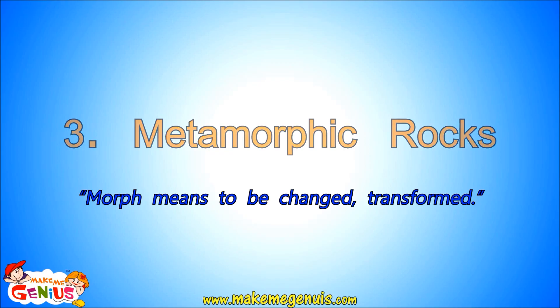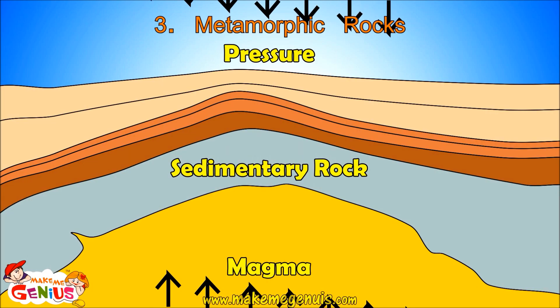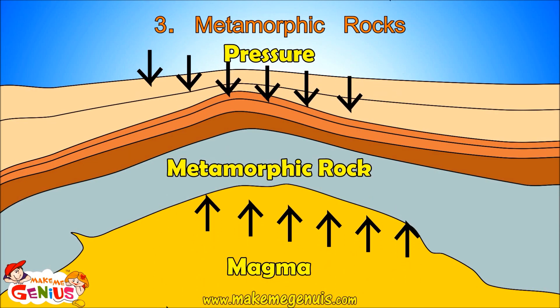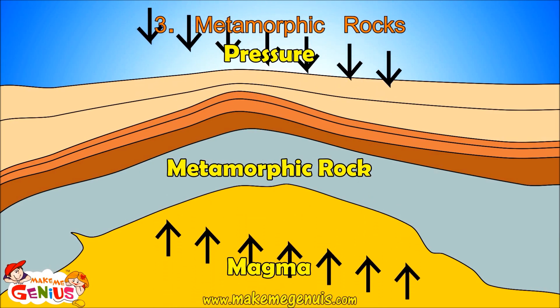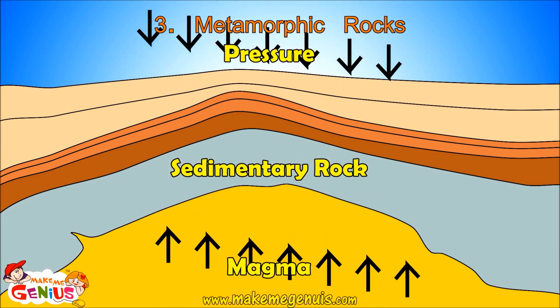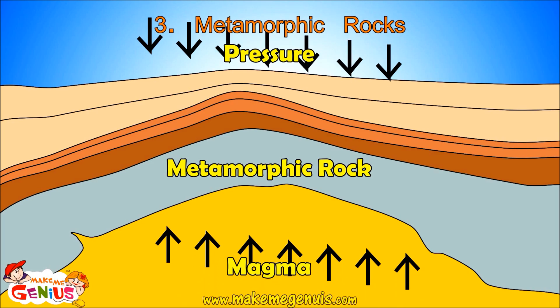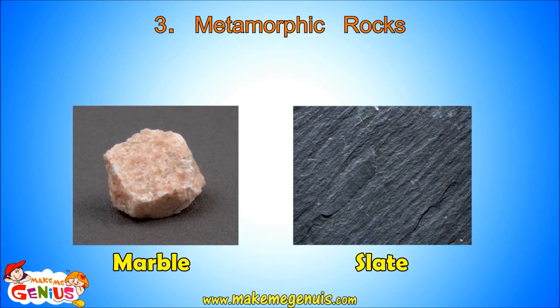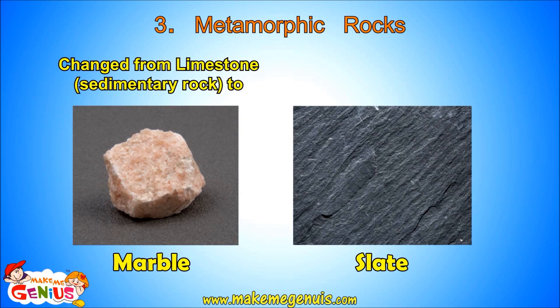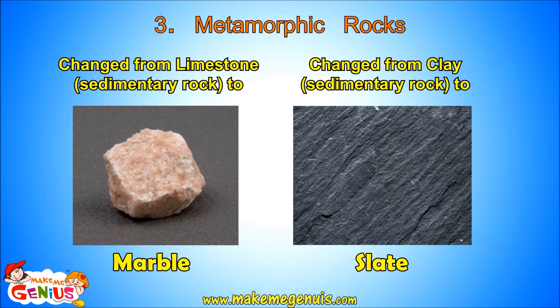The third type of rocks are called metamorphic rocks. Metamorphic is derived from the word morph, which means to be transformed or to change. Metamorphic rocks are changed forms of igneous and sedimentary rocks, formed when other types of rocks are changed due to a lot of heat or pressure. In this picture, heat from molten magma and pressure from upper layers causes sedimentary rocks to change. Marble and slate are two types of metamorphic rocks. Marble is formed when limestone, a sedimentary rock, comes under a lot of pressure from above. Similarly, slate is formed when clay is changed by heat and pressure.